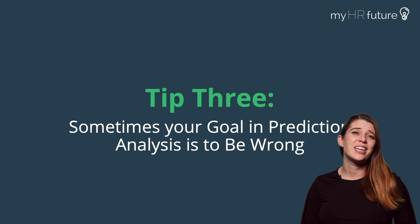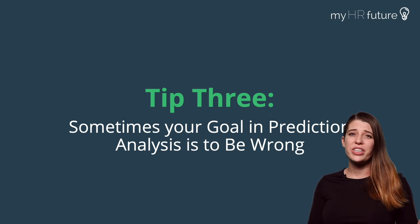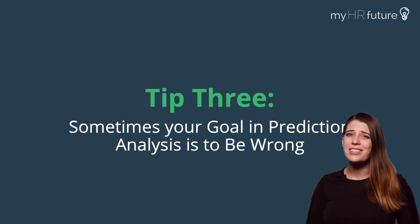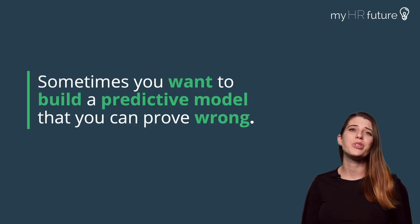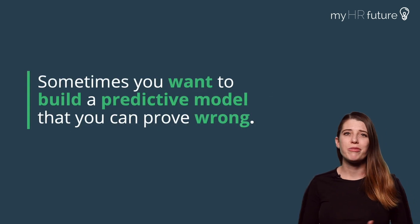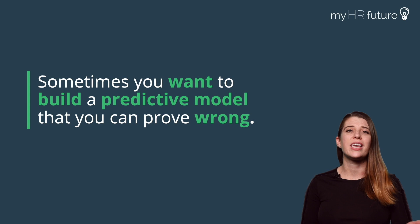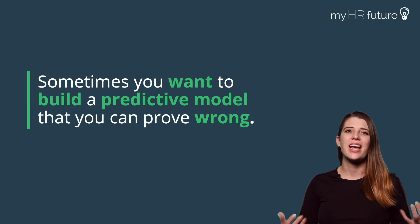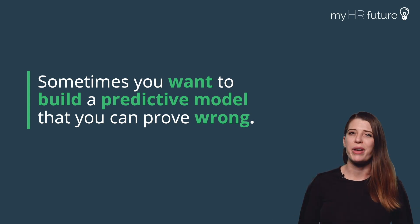Tip number three is that sometimes your goal in prediction analyses is to be wrong. Sometimes you want to build a predictive model that you can prove wrong in the end because you made changes in talent management and activities to make it better.